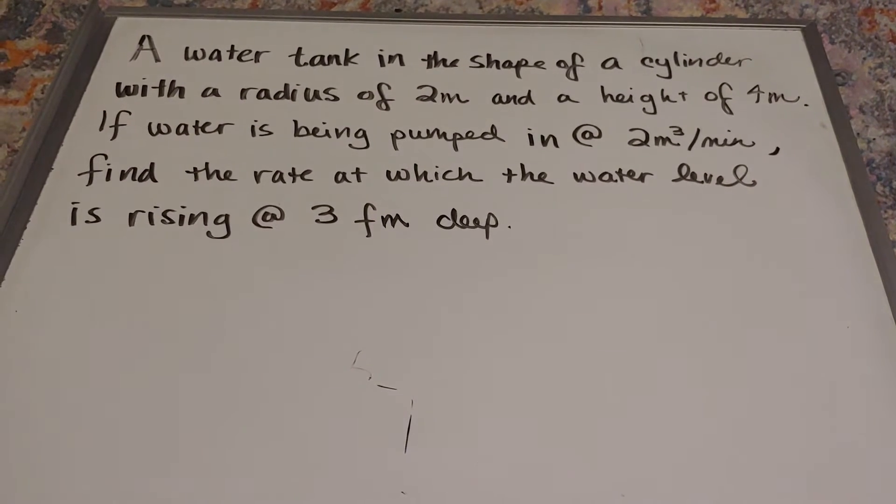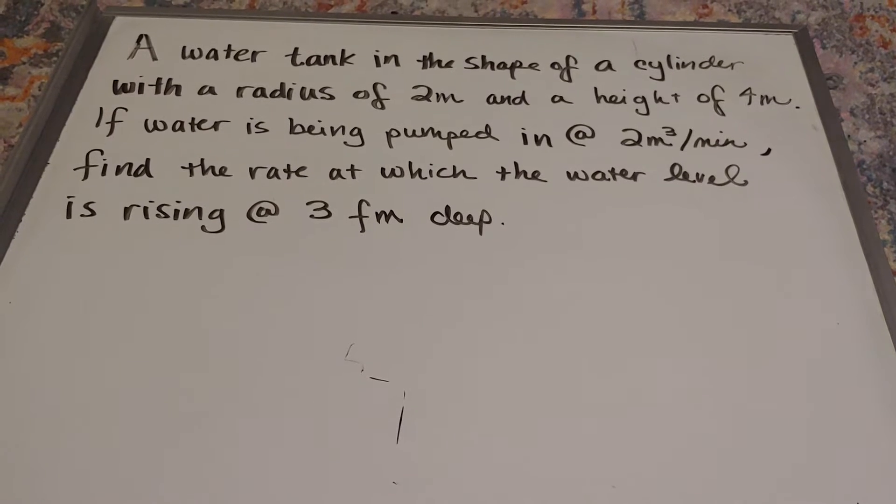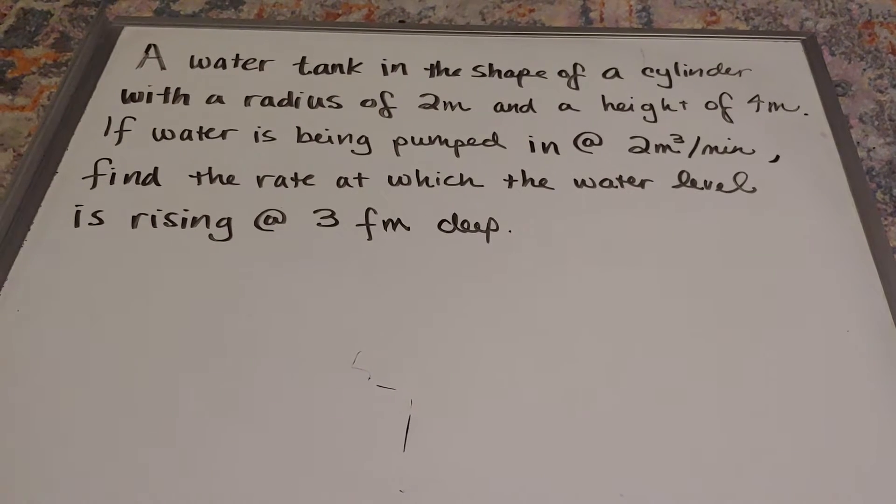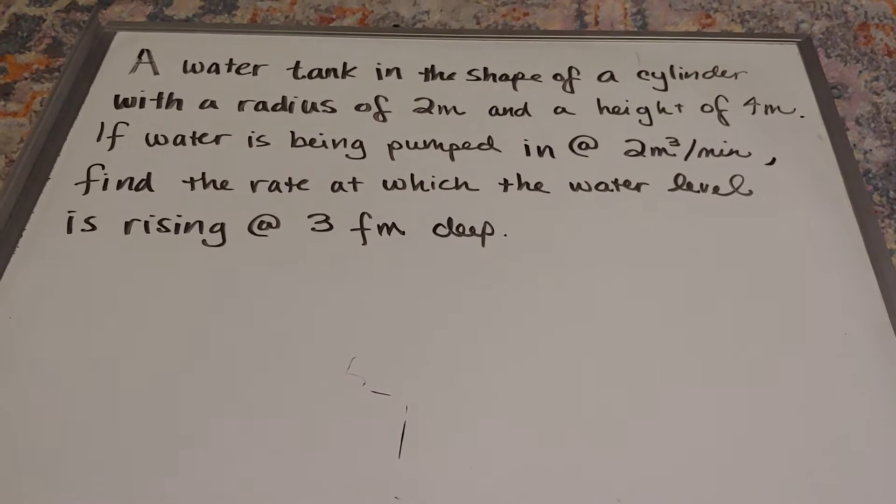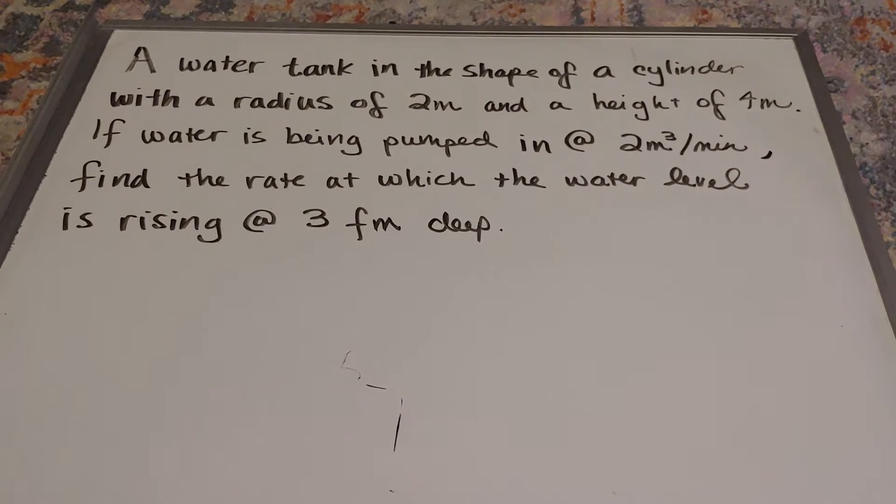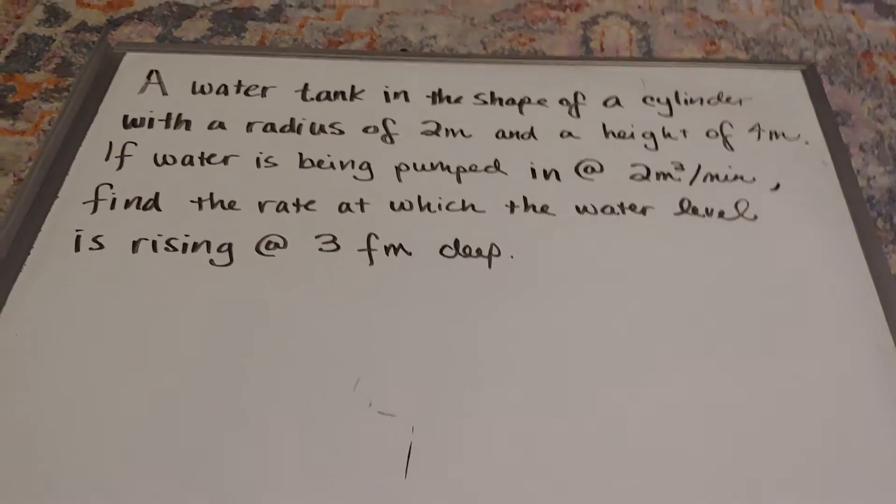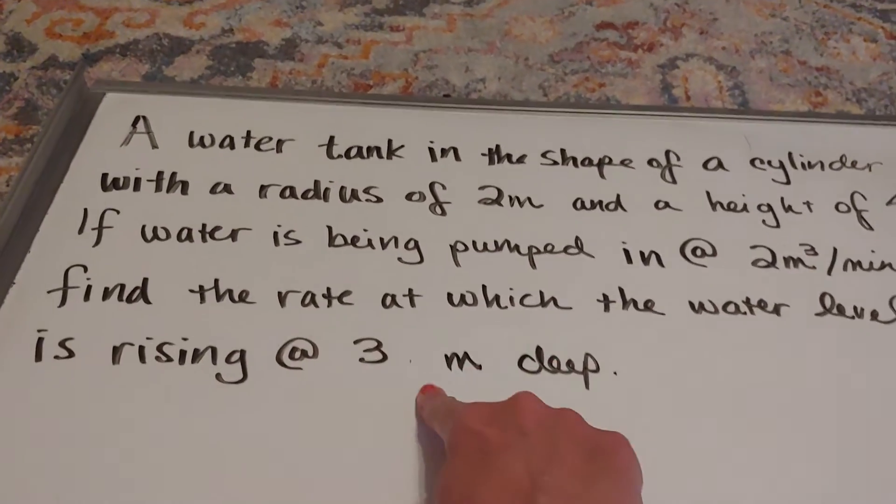In this video, we're going to look at a related rates problem involving a cylinder. It says a water tank in the shape of a cylinder with a radius of 2 meters and a height of 4 meters is what we have. If water is being pumped in at 2 cubic meters per minute, find the rate at which the water level is rising at 3 meters deep.